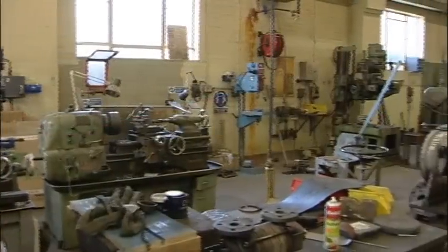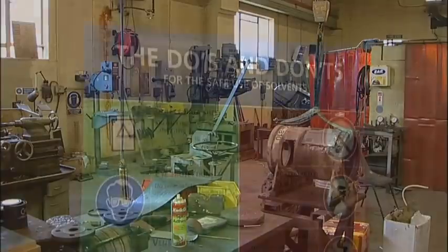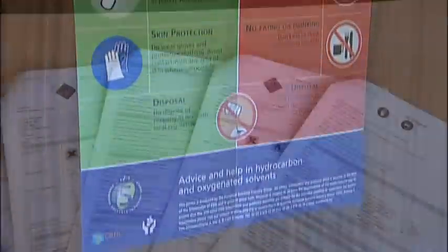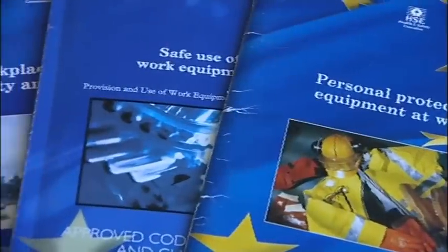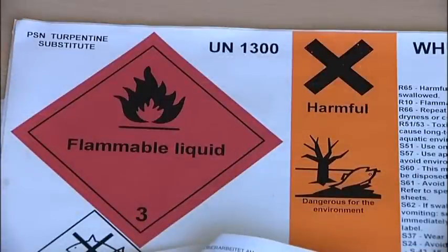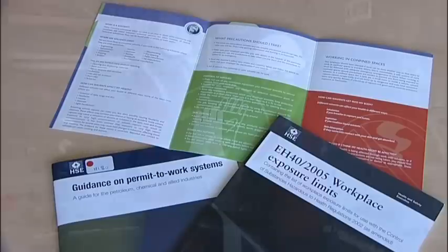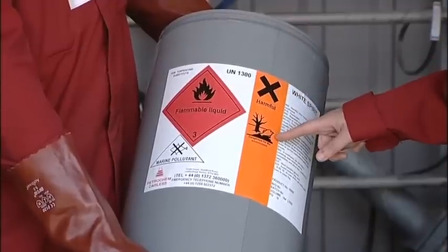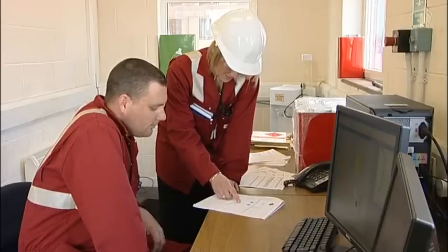Now that we're all aware of the potential hazards, we need to know what we're dealing with in our own workplace. A well-regulated legal framework is in place to provide protection for both workers and the environment. There are many sources of information, such as safety data sheets, to help you gain the knowledge needed to safely handle any solvent you work with, so make sure you know what's available. If anything is unclear, ask your supervisor and contact the approved supplier if more information is needed.